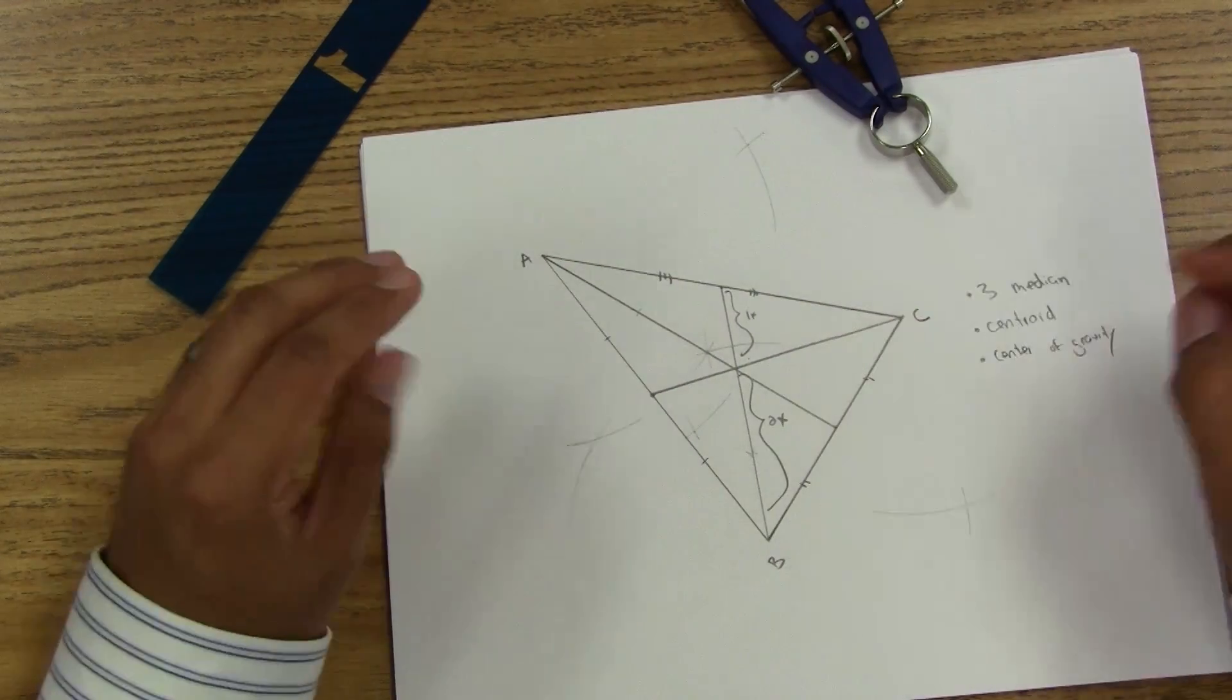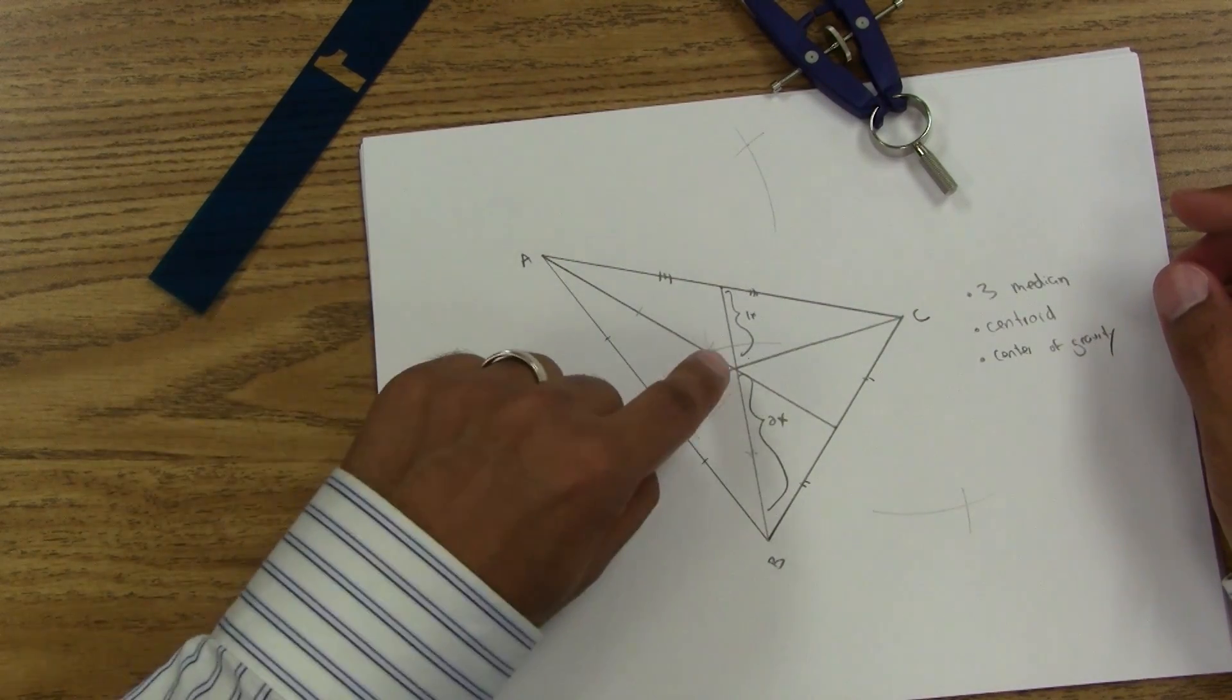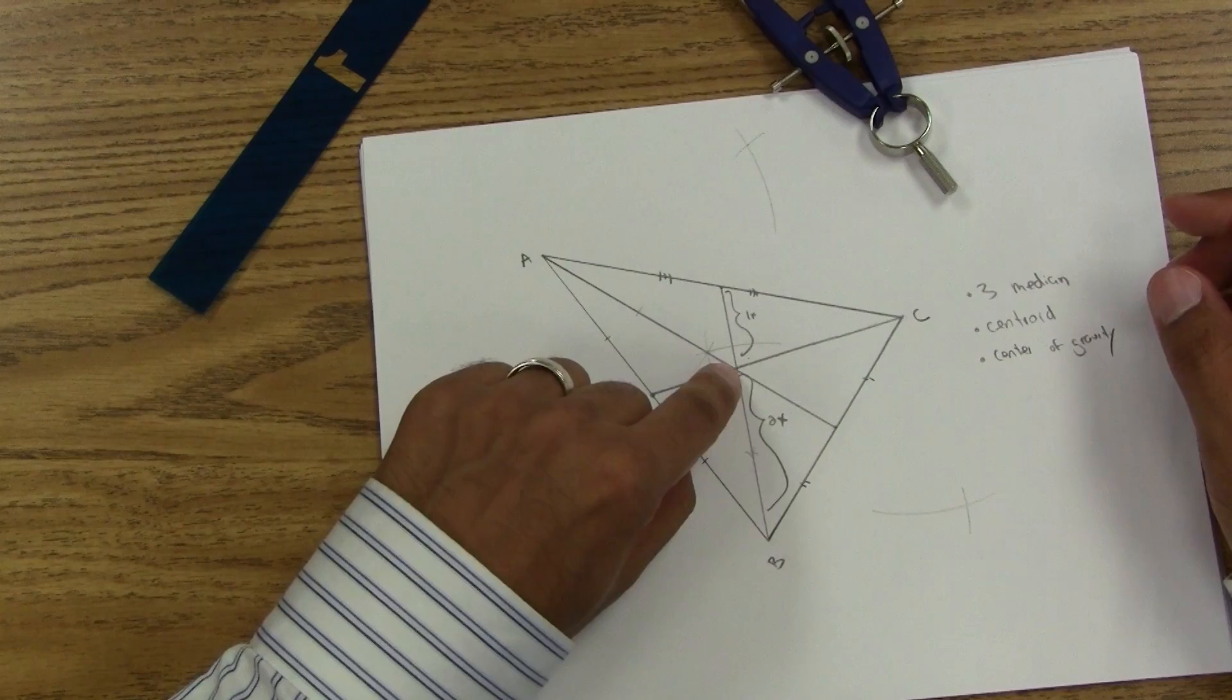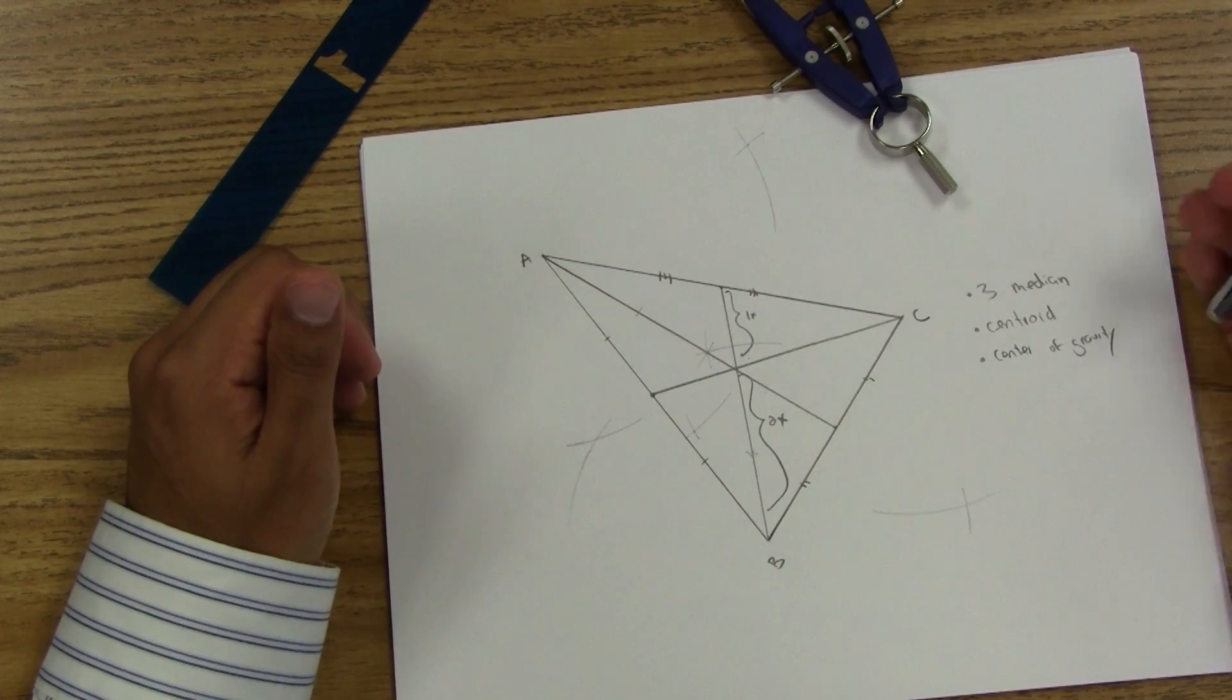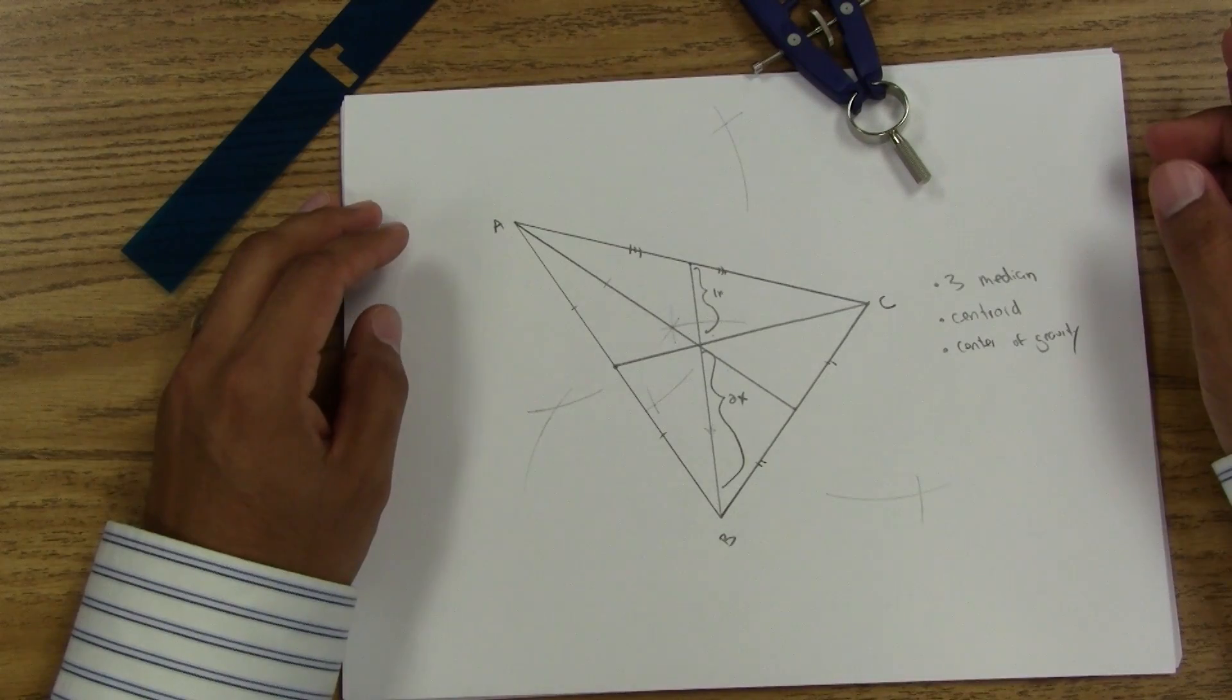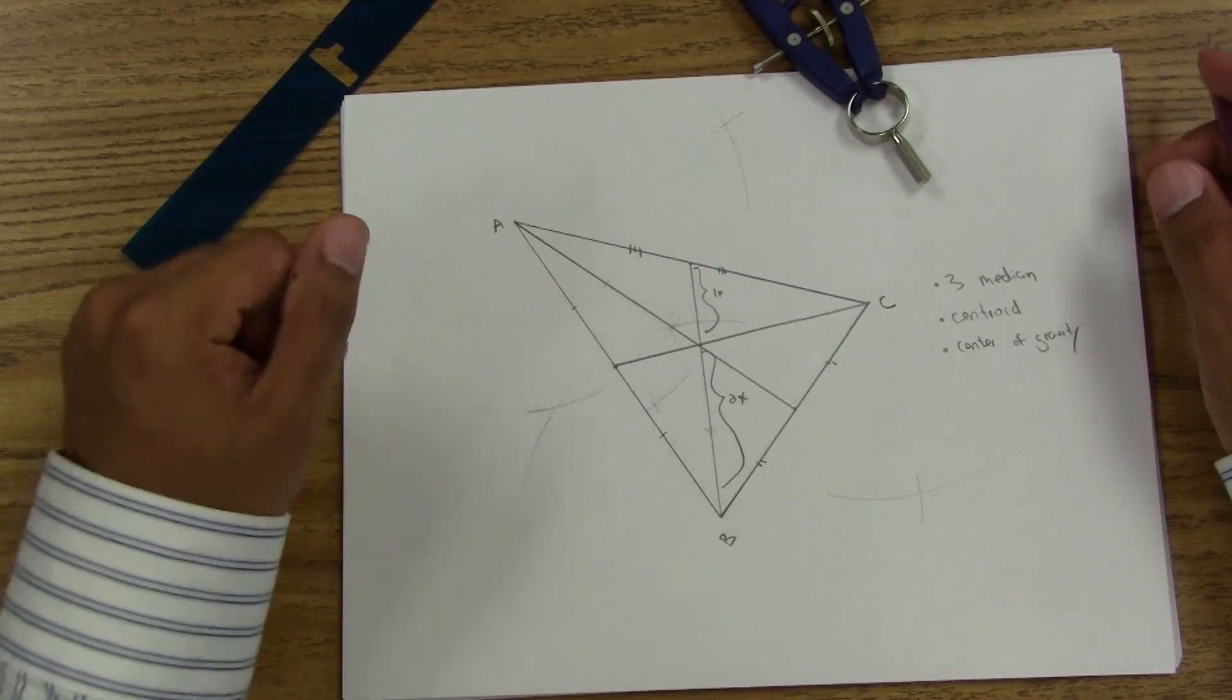So for any of the triangles, if you are touching the centroid, your triangle will be balanced. That's it for today. Until next time.